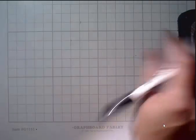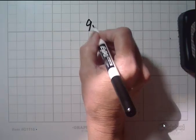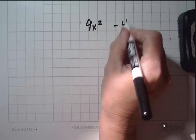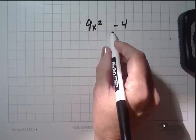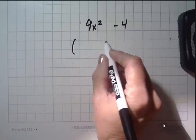Let's do another one. 9x squared minus 4. 9 is a perfect square. 4 is a perfect square. There's a minus sign in between.